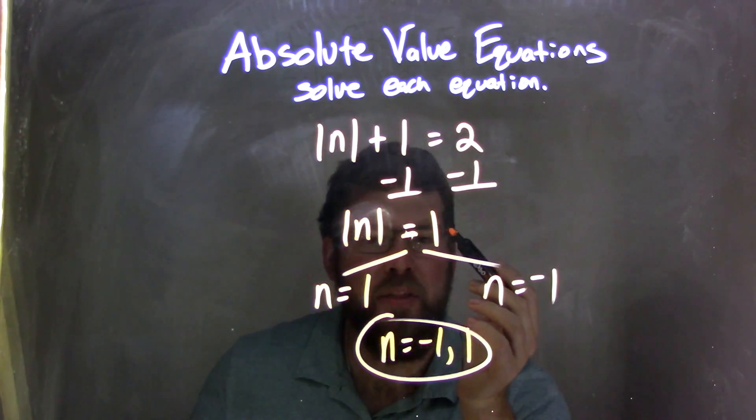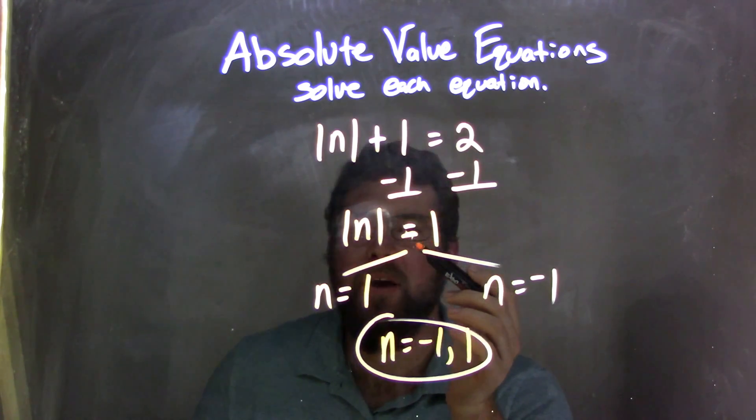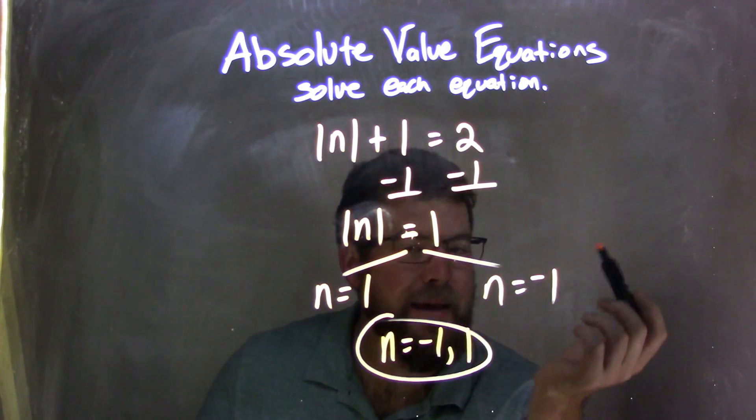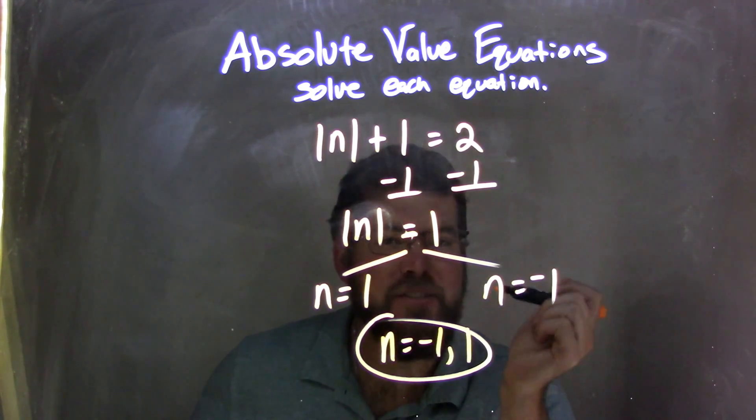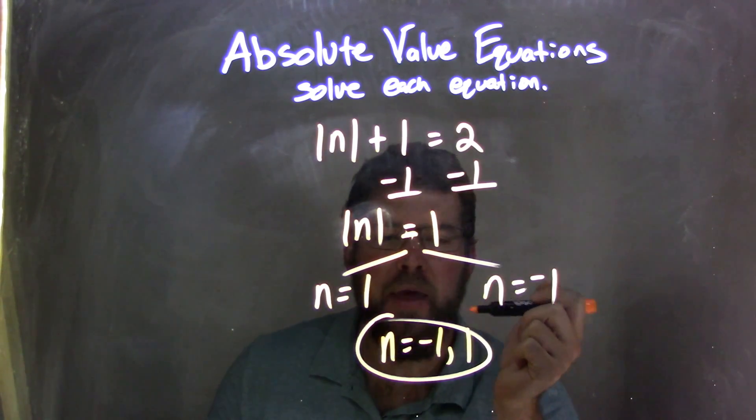From there, I can break it apart, get rid of the absolute value by making the equation equal positive or negative, so n equals 1 or n equals negative 1. Then I was pretty much done. I just rewrote this to go from least to greatest. It looks a little nicer that way.